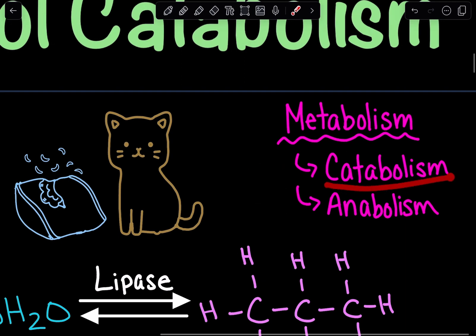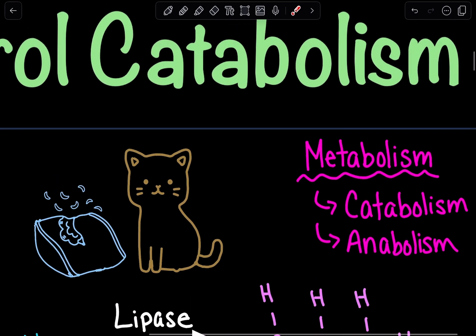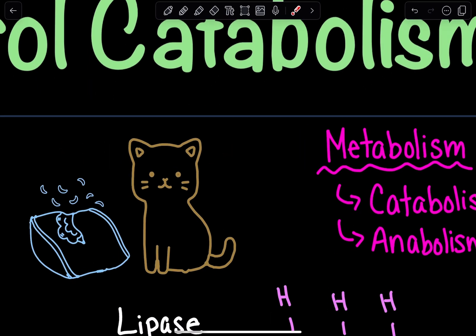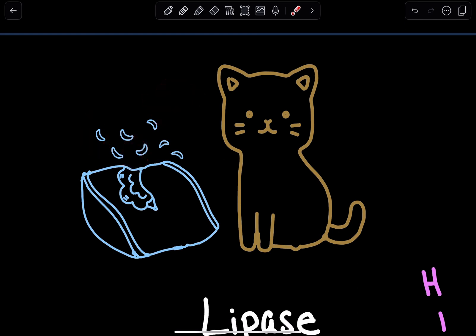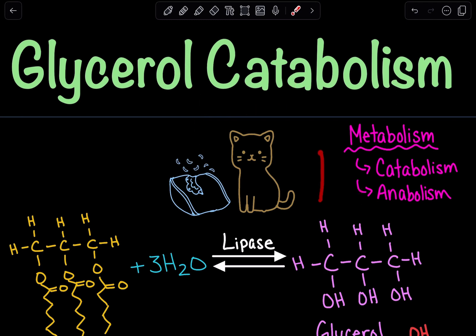Catabolism is where we break something down, and anabolism is where we build something up. To remember which is which, we can think about the prefix 'cat' and picture a cat breaking something down — easily imagining a cat ripping apart a pillow into its fiber components. So if catabolism is breaking something down, anabolism is the opposite: building something up.